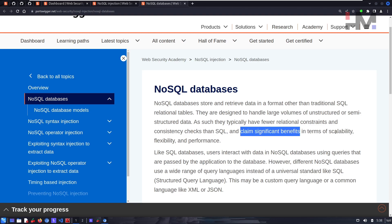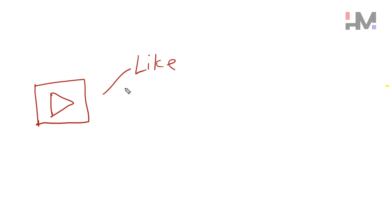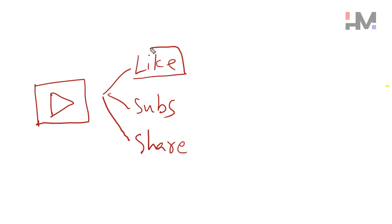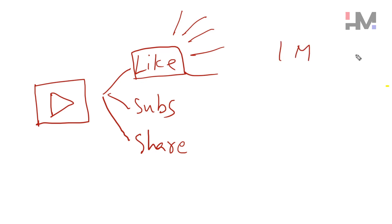NoSQL databases claim significant benefits in terms of scalability, flexibility, and performance. To understand large volumes of unstructured data, let's take an example everyone knows. Consider a YouTube video that has likes and shares. If a million people give a like to this video, it's a million inputs — and it's not just a count being incremented in the database.